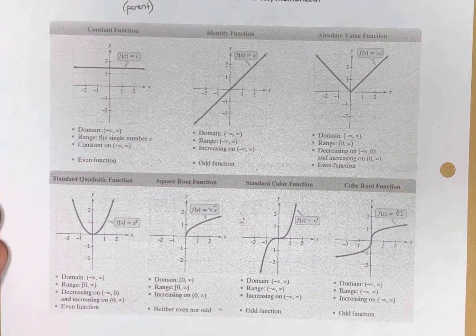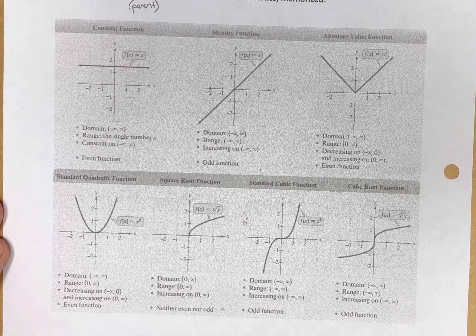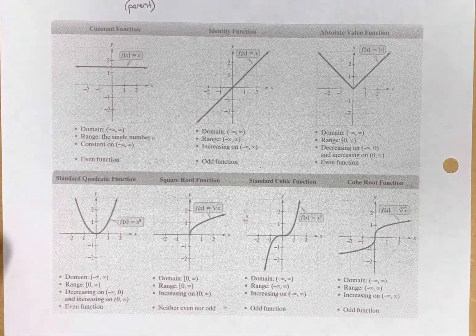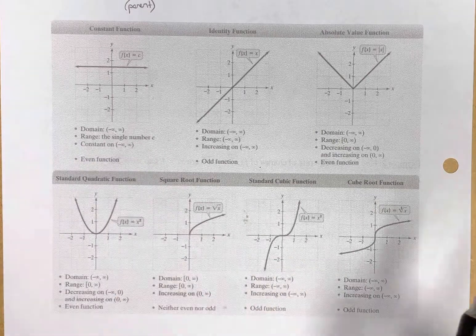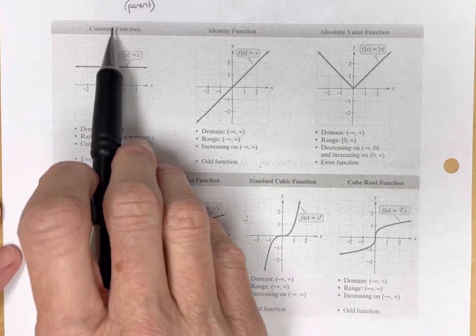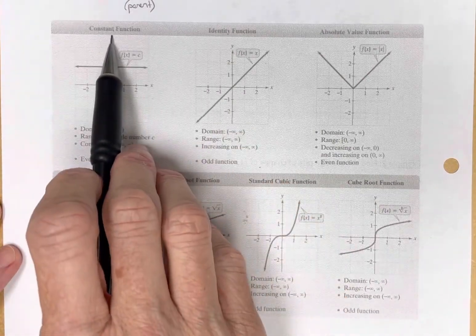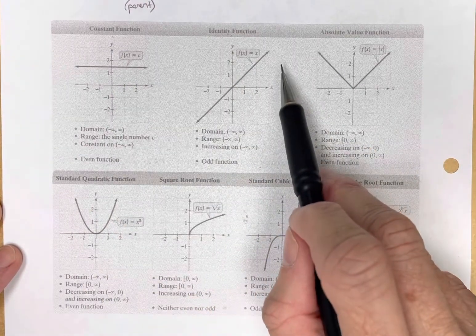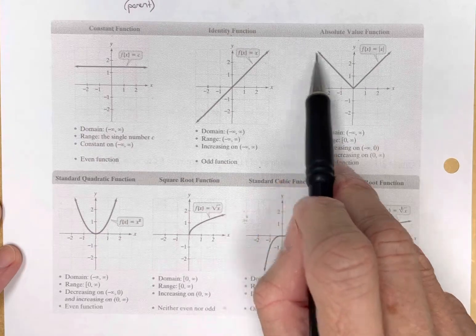So let's take a look at these. And I just copied this from a textbook. So what this gives you is the common function. Here's the constant function, the identity function, which is also the linear function. Absolute value, which forms the V.